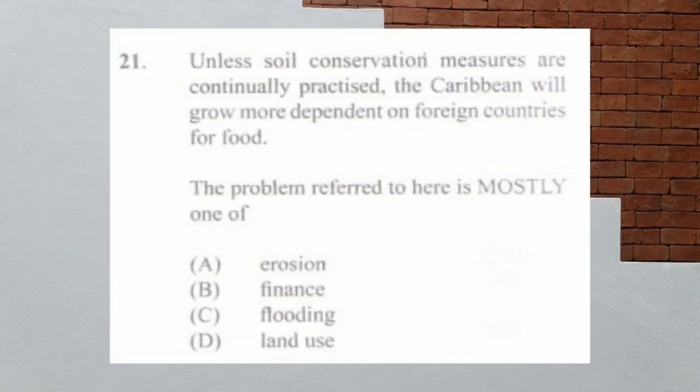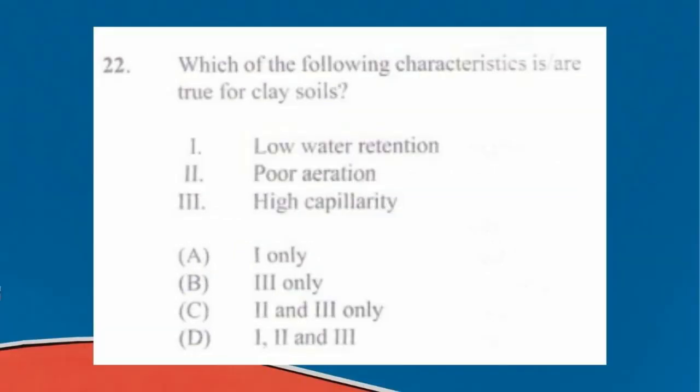Question number twenty-one: unless soil conservation measures are continually practiced, the Caribbean will grow more dependent on foreign countries for food. The problem referred to here is mostly one of a) erosion, b) finance, c) flooding, d) land use. The answer is a) erosion.